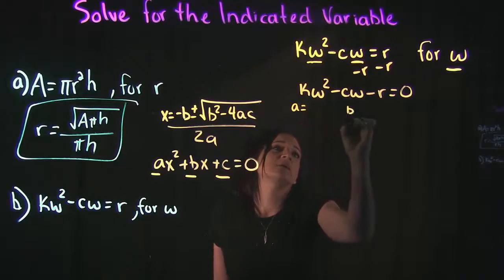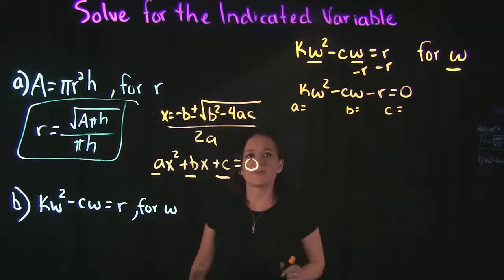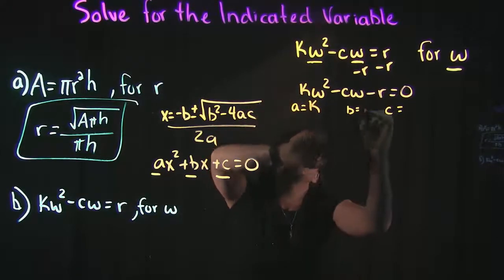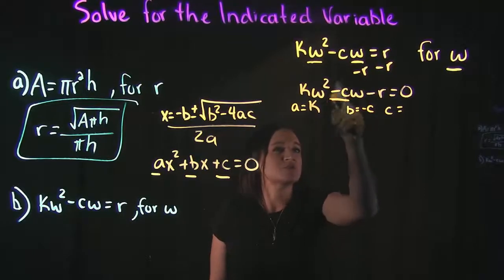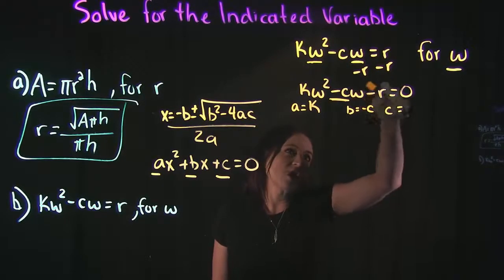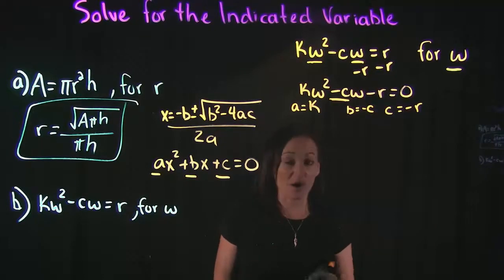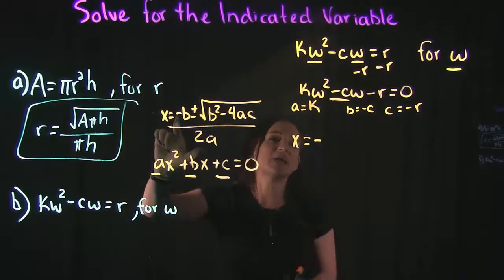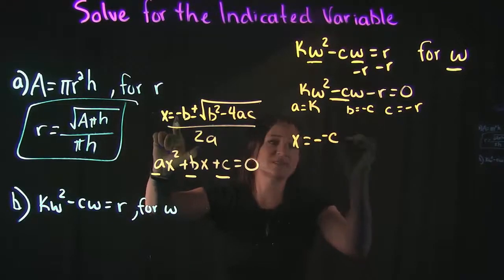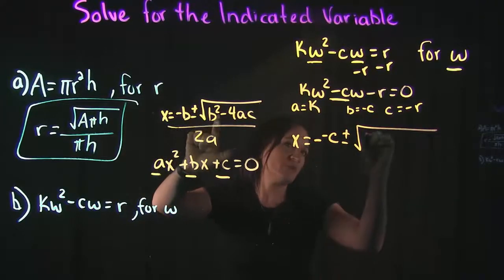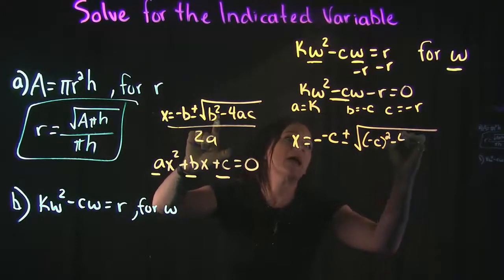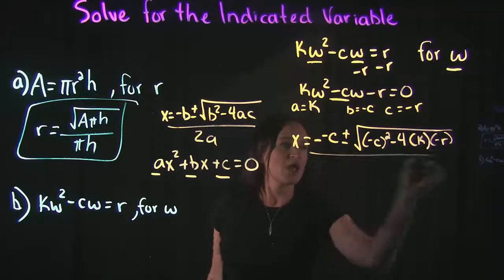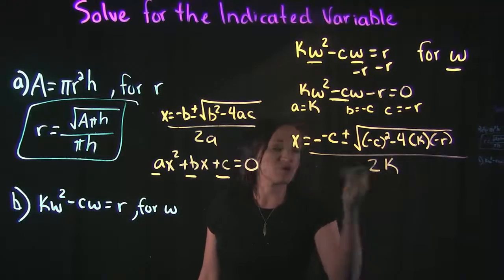Now we're ready to label a, b, and c. In the quadratic formula, a is the coefficient of the squared term, b is the coefficient of the first-power term, and c is the constant. So a equals k, b equals negative c, and c equals negative r. Plugging into the quadratic formula — x equals negative b plus or minus the square root of b squared minus 4ac, all over 2a — we get negative negative c, plus or minus the square root of negative c squared minus 4 times k times negative r, all over 2k.